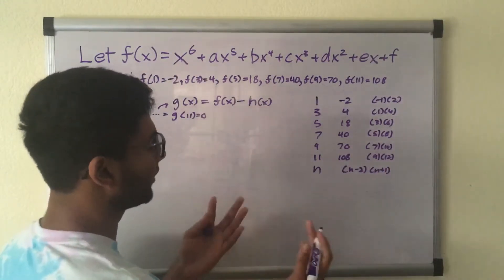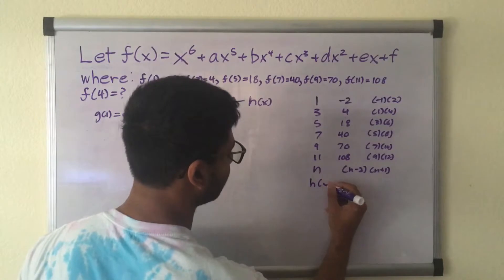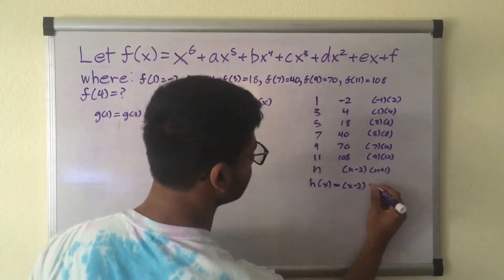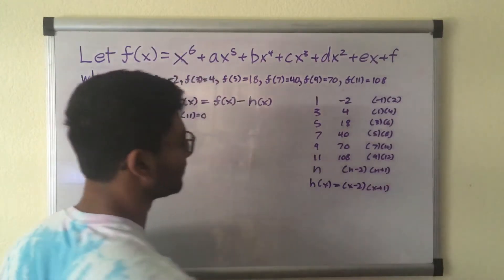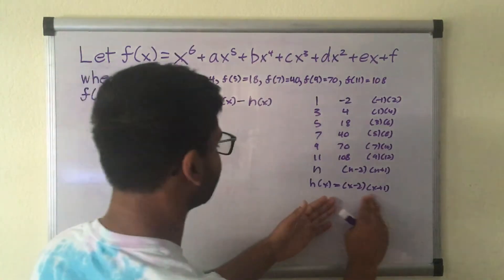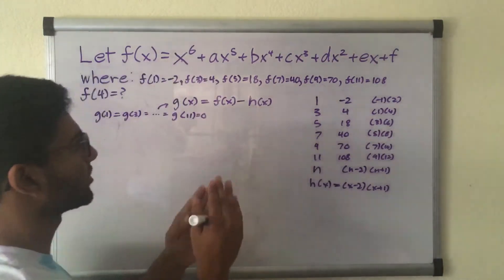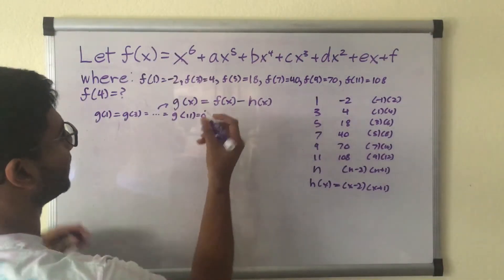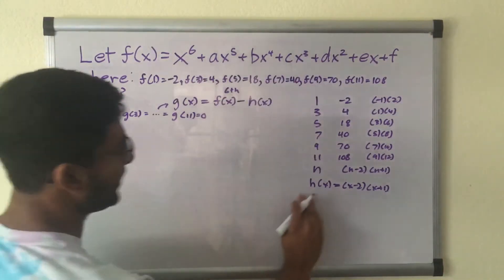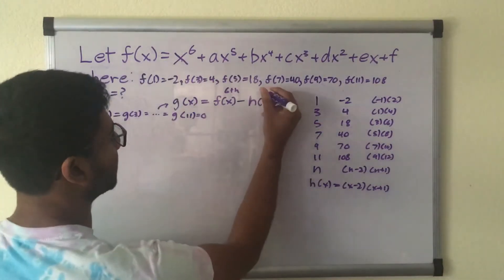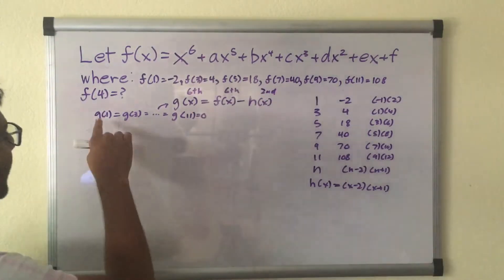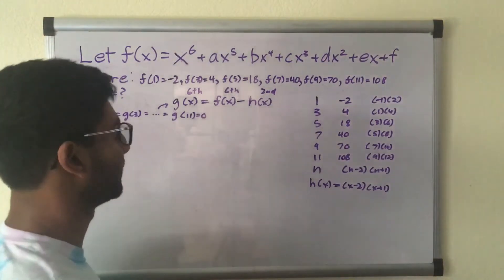So we have an idea for h of x. Our h of x could be x minus 2 times x plus 1. So now what we're going to do is we're going to take this h of x and put it in. But first, let's observe something real quick. f of x is a 6th degree polynomial. h of x, well, this will be a 2nd degree polynomial. So this confirms that g of x will be a 6th degree polynomial and these will be the only roots of g of x.